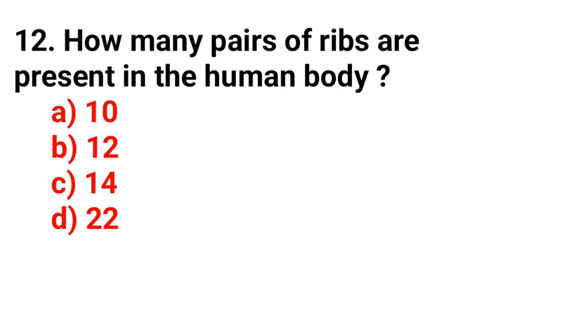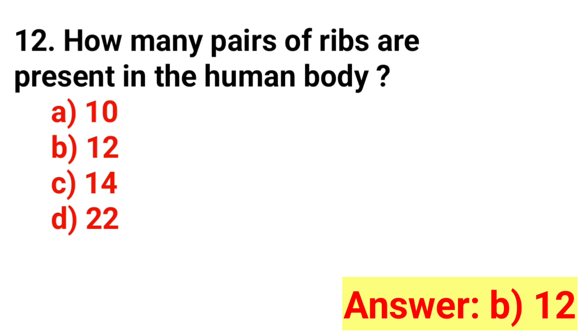Question number 12. How many pairs of ribs are present in the human body? The answer is option B: 12.